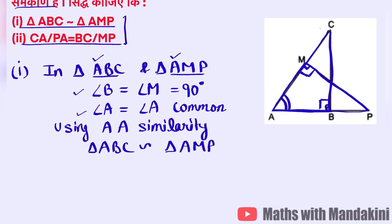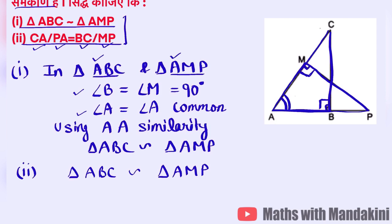Using Angle-Angle similarity, triangle ABC is similar to triangle AMP — this is proved. The first part is proven so easily. Now let's move to the second part. In the second part, we need to prove CA upon PA is equal to BC upon MP.